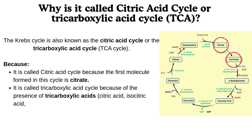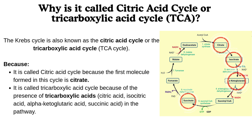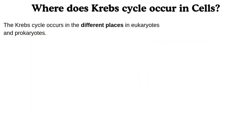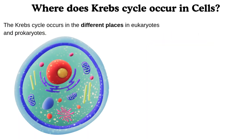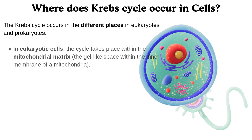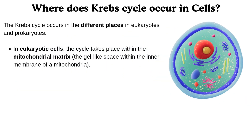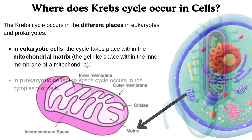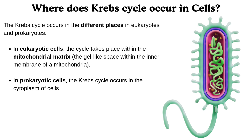These tricarboxylic acids include citric acid, isocitric acid, alpha-ketoglutaric acid, and succinic acid in the pathway. Where does the Krebs Cycle occur in cells? The Krebs Cycle occurs in different places in eukaryotes and prokaryotes. In eukaryotic cells, the cycle takes place within the mitochondrial matrix, the gel-like space within the inner membrane of a mitochondria. In prokaryotic cells, the Krebs Cycle occurs in the cytoplasm.